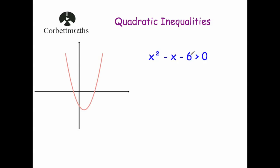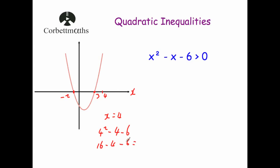Now let's look at the same inequality when it's bigger than 0. We know the x-axis crossings are at 3 and minus 2. We want values that give a positive result — that's when the graph is above the x-axis. We've got two distinct regions: to the right of 3 and to the left of minus 2. Let's try x equals 4: 4 squared minus 4 minus 6 gives 16 minus 4 minus 6 equals 6, which is positive. Any value bigger than 3 will be positive and that goes on forever, because the quadratic's U-shape just keeps going up.